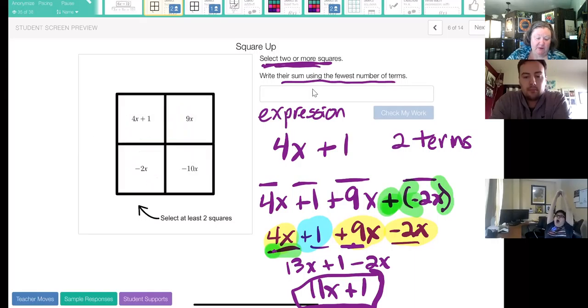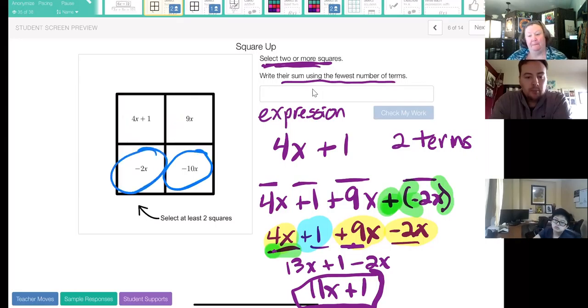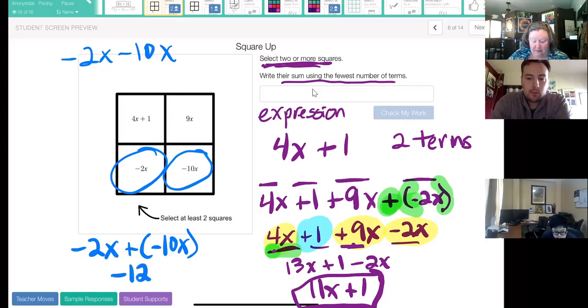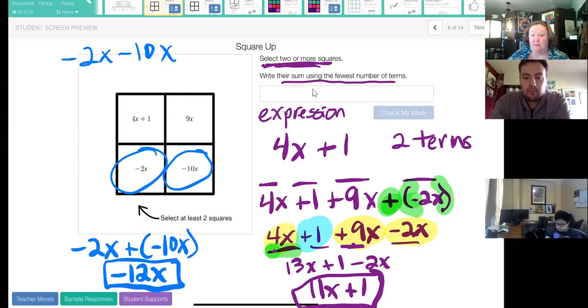If, let me go back to this originally and choose a different set. What if I had chosen just these two squares? Well, that's a different expression. I would have negative 2x and a negative 10x or I could write that as negative 2x minus 10x. Both coefficients here are negative. I have negative 2 and negative 10. And so when I combine negative 2 and negative 10, I end up with negative 12x. And that is its lowest number of terms or fewest number of terms.